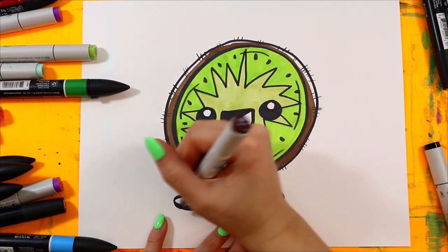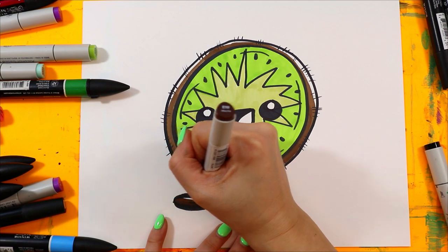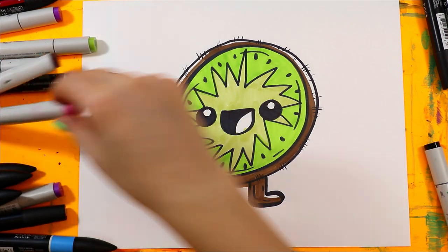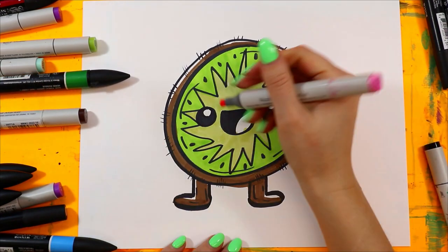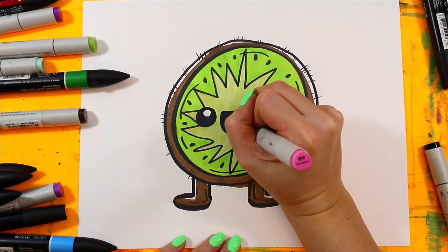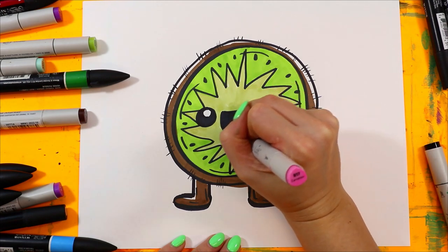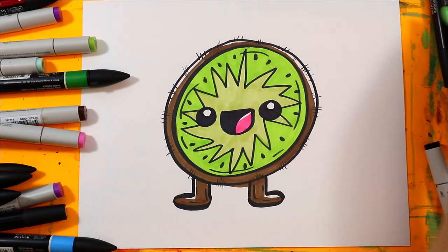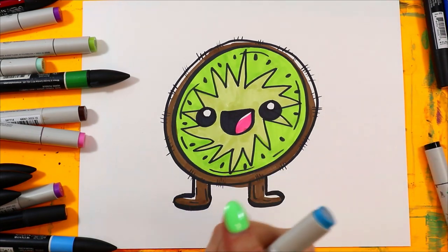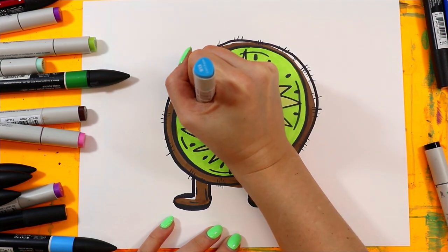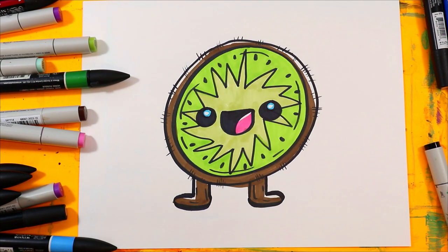I'm leaving a little bit of white on the top for highlights. Add a little blue to the eyes. And just like that, your cute kiwi is done.